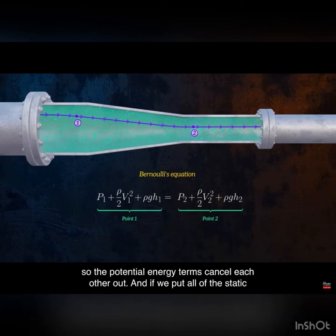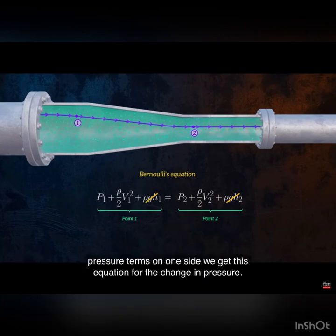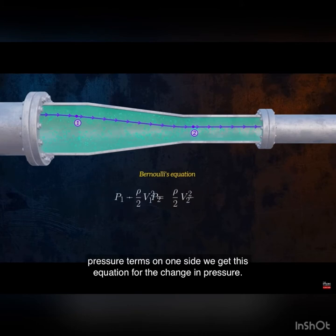There's no significant change in elevation between points 1 and 2, so the potential energy terms cancel each other out. And if we put all of the static pressure terms on one side, we get this equation for the change in pressure.